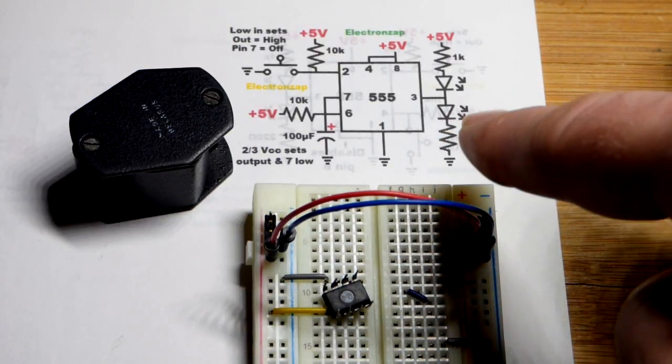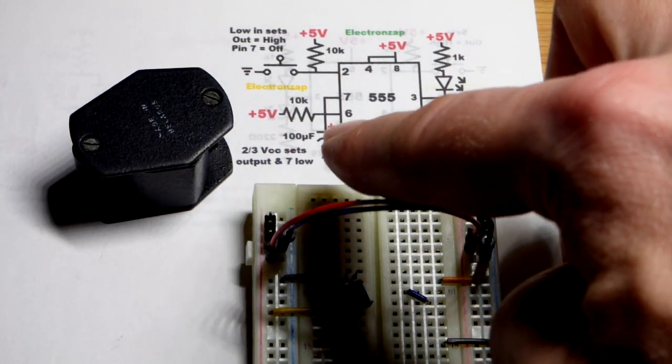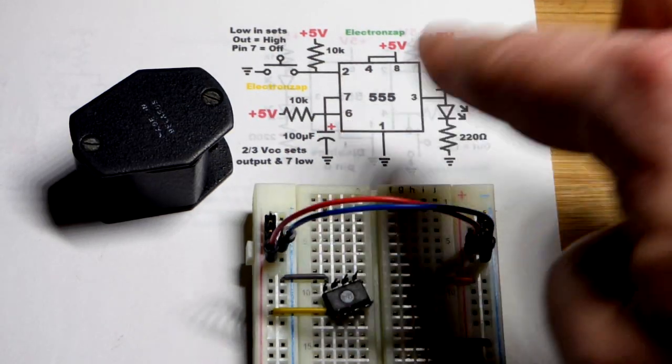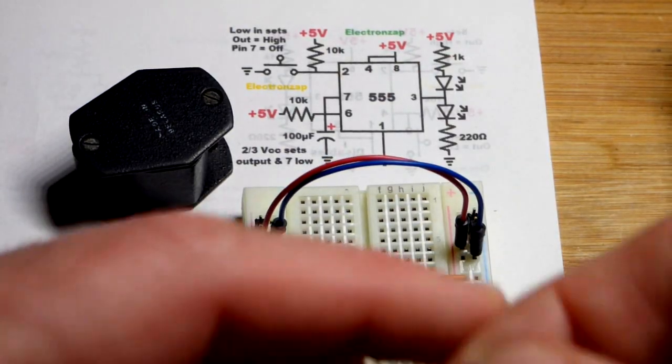The capacitor will start charging at that time. The output will be high. I'm going to use a red LED to light up in that case. The amount of time the output's going to be high is for however long it takes the capacitor to go from zero volts to two-thirds of the supply voltage.